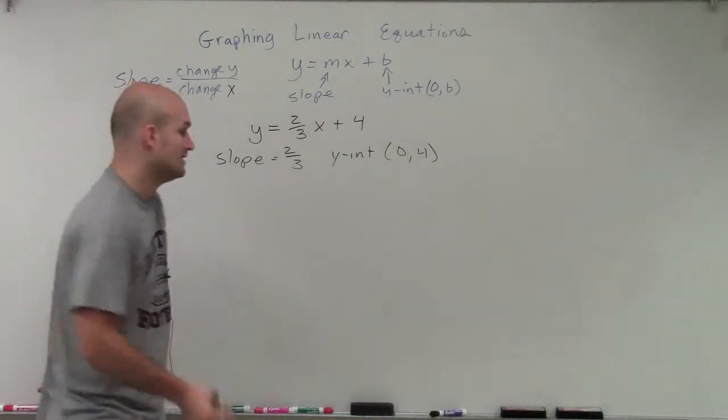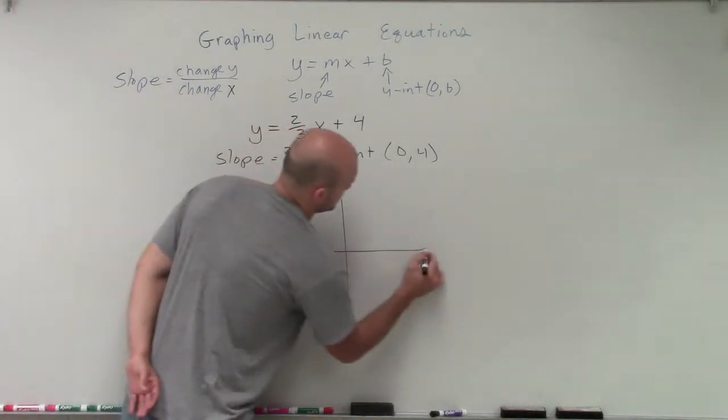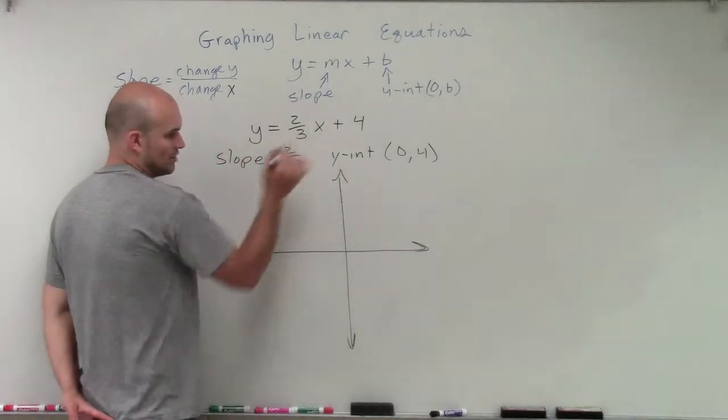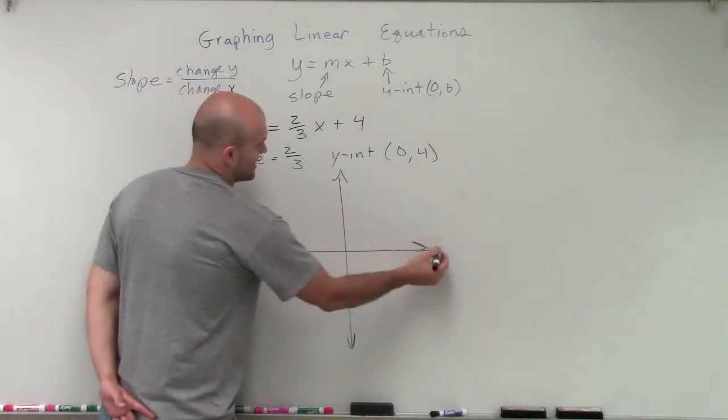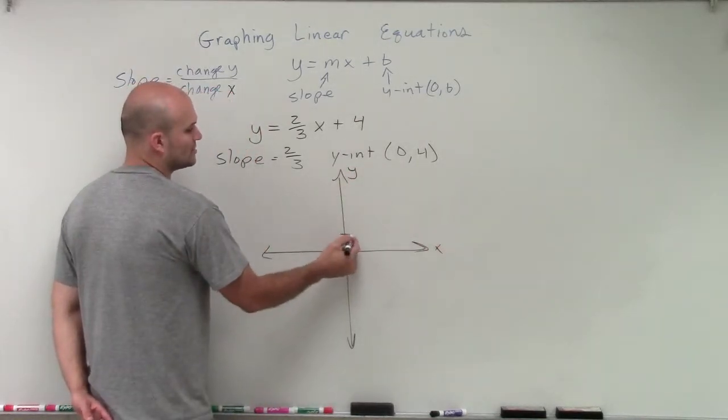So now, remember, when graphing an equation that's in slope-intercept form, the first thing that we're going to want to do is make sure that we plot the y-intercept, which is at 0 comma 4. So along my x-axis, I'm not going to be going anywhere, but along my y-axis, I'm going to go up 4: 1, 2, 3, 4.